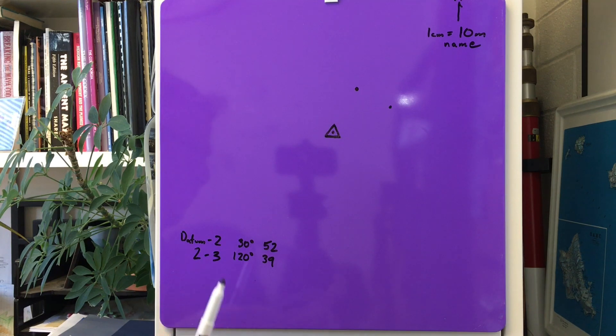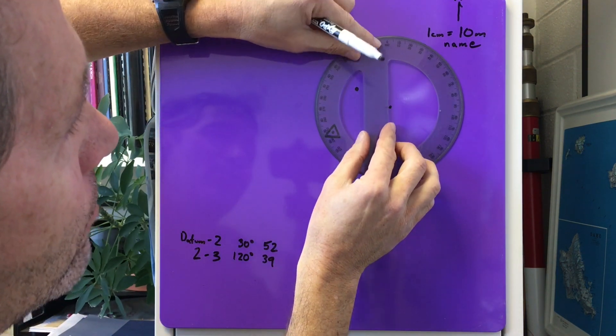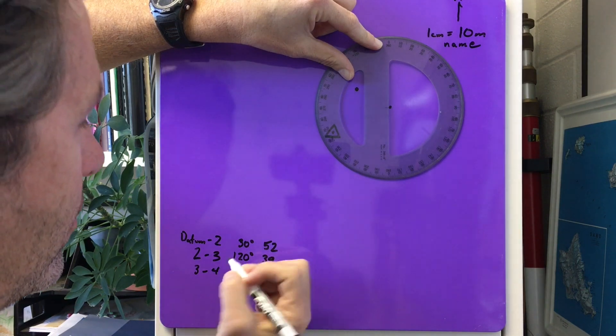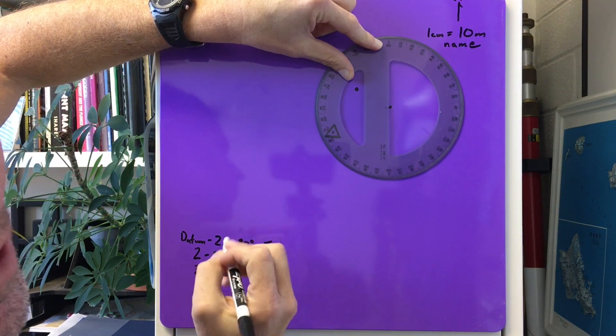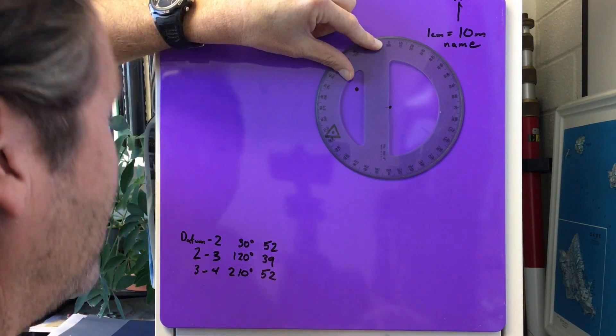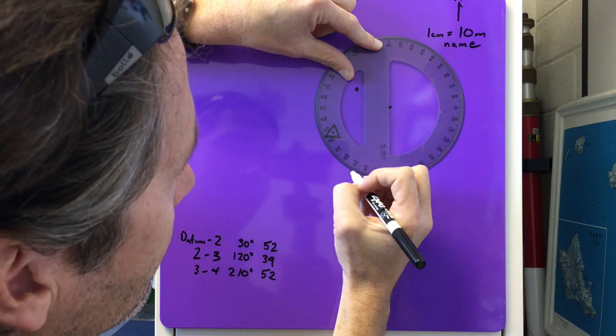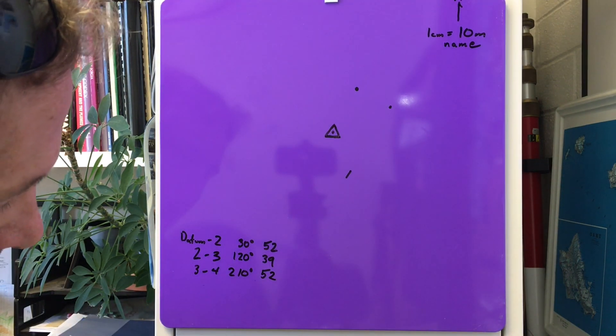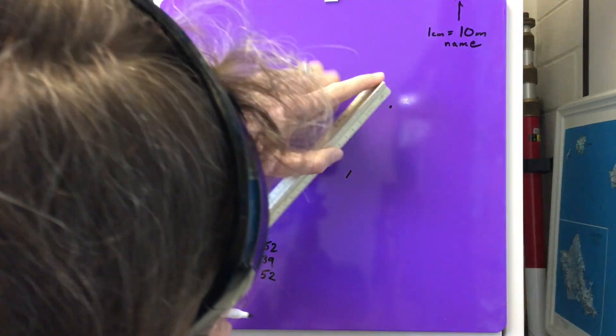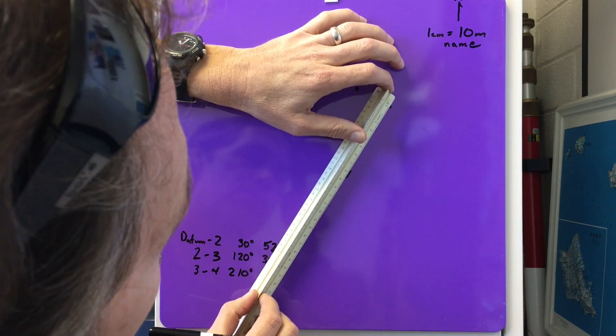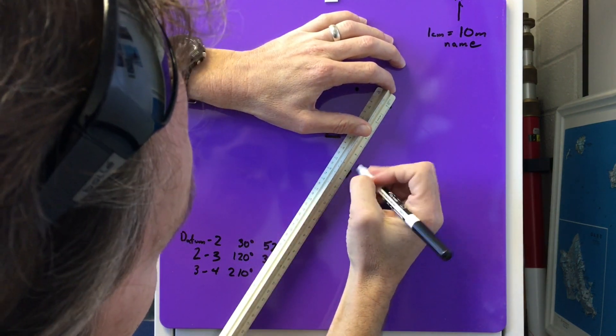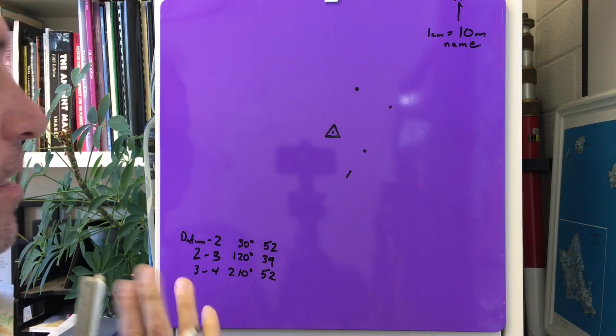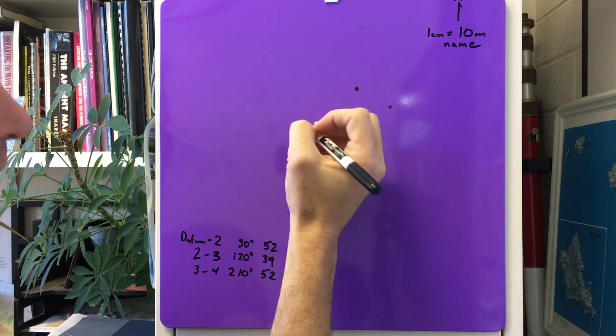Once you get the feel for it you'll be able to continue pretty smoothly. The third one I'll align over the new point. Point three to point four - let's say it's 210 degrees and it returns to 52 meters. So now I go 210 degrees, 210 is right there. Move this away. This time I'm measuring 5.2 again. This time from the new dot of course, angling along to the tick, 5.2.